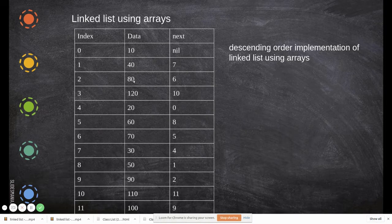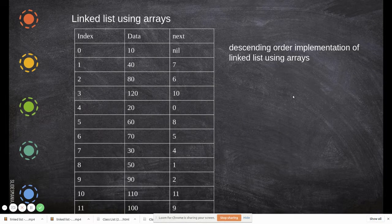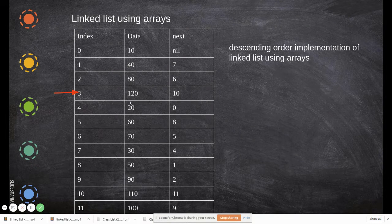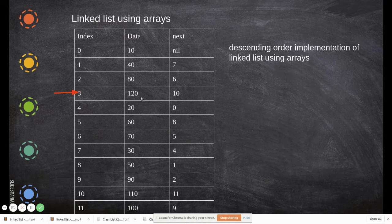If you see this, the first data starts here as the biggest element. In descending order it starts largest to smallest. So this is the starting point, 120 is the largest element.